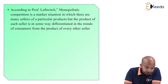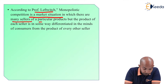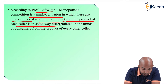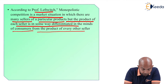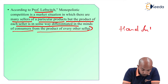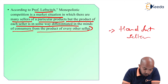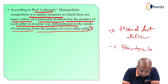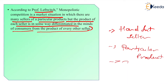According to Professor Leftwich, monopolistic competition is a market situation in which there are many sellers of a particular product, but the product of each seller is differentiated in some way in the minds of consumers from the product of every other seller. In such a market there will be a handful of sellers selling particular products, and these products will be differentiated according to the needs of consumers.